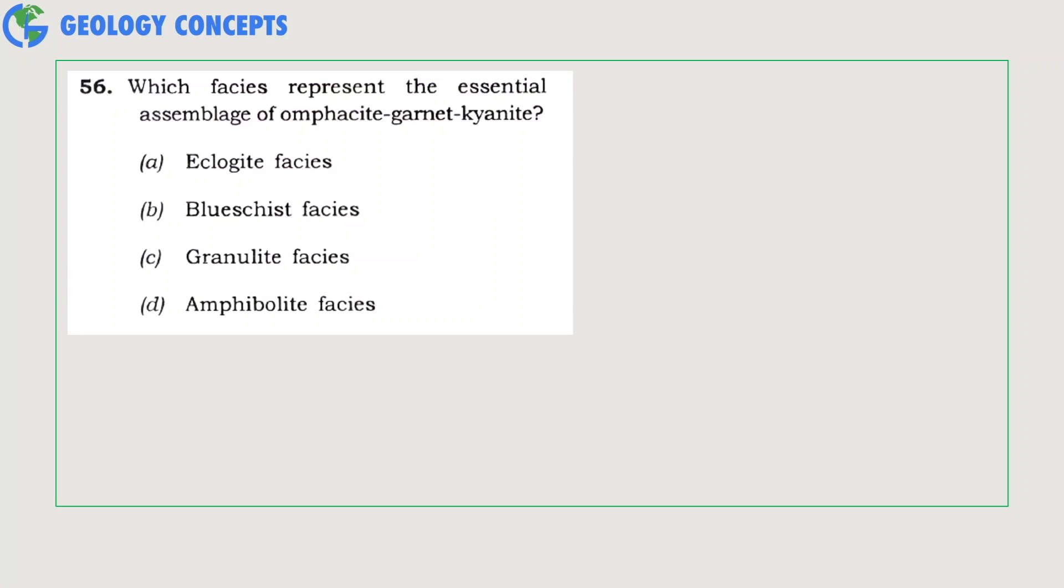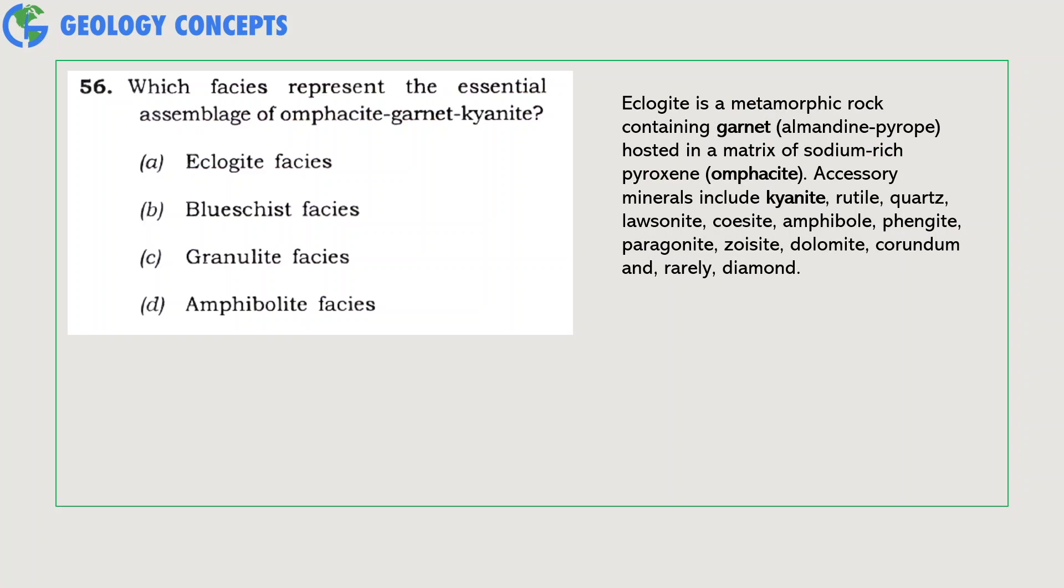Which facies represents the essential assemblage of omphacite, garnet, and kyanite? As you may have known, eclogite is a metamorphic rock that contains garnet with composition between almandine to pyrope hosted in a matrix of sodium-rich pyroxene omphacite. Accessory minerals include kyanite, rutile, quartz, lawsonite, coesite, amphibole, phengite, and also sometimes diamond. Hence, option A is the right answer.